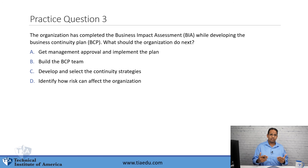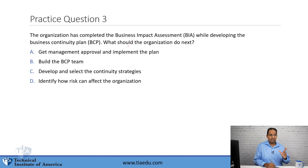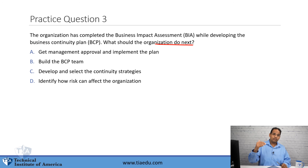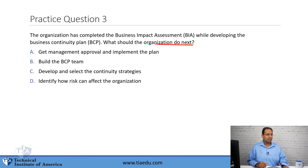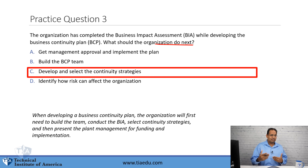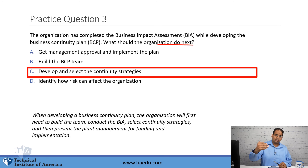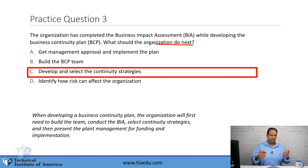This is a typical CISSP question asking what should you do next — you have to know the steps of BCP. The answer is develop and select the continuity strategies. In the steps of BCP, the first thing you do is build the team — so it's not B, because you would have had to build a team before completing the BIA. Then you conduct the BIA, which is what this question describes. Then you select your continuity strategy.